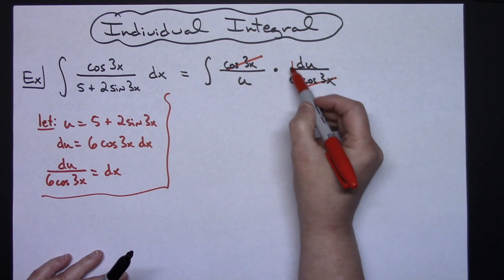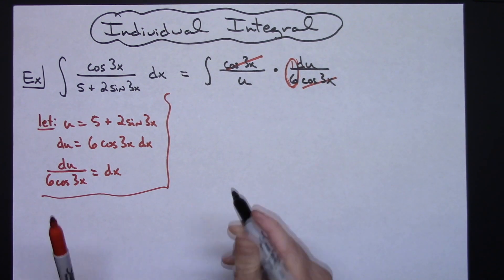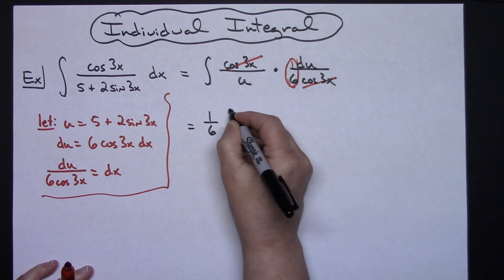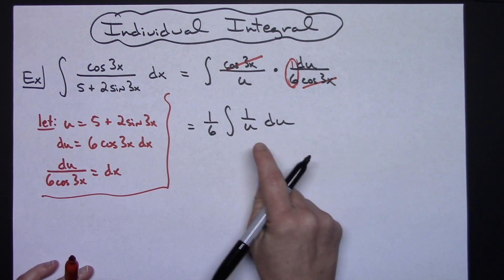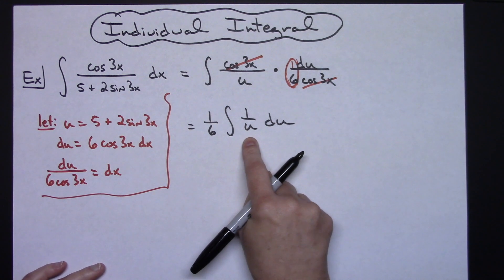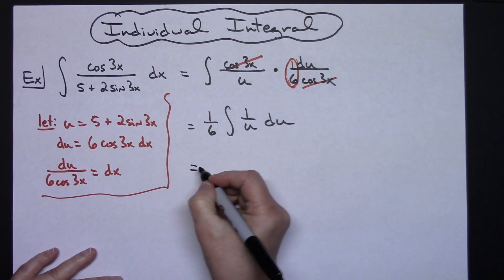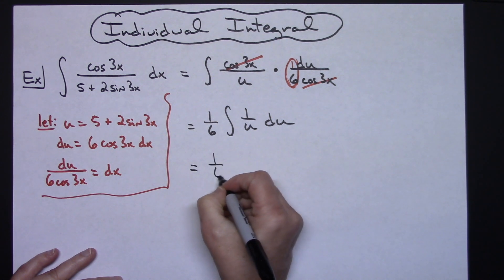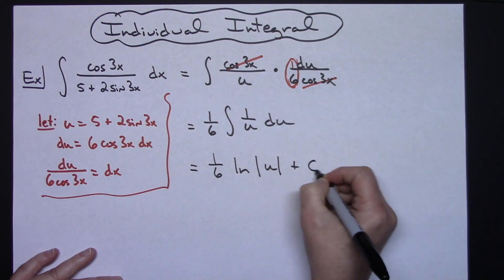I've got that imaginary one that's in front there so I can pull out that entire 1/6. So we'll pull out that 1/6 then I'll have the integral of 1 over u du. Hopefully at this point you have this memorized as being the natural log absolute value of u.